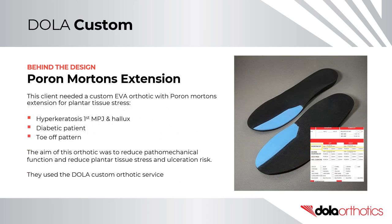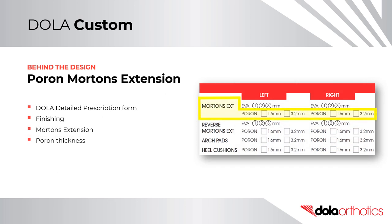Behind the Design – Poron Morton's Extension. This client needed a custom EVA orthotic with a Poron Morton's extension to reduce plantar tissue stress. The patient presented with hyperkeratosis under the first MPJ and hallux and is an at-risk diabetic. The aim was to reduce pathomechanical function and plantar tissue stress on the hallux to reduce ulceration risk. They used the Dollar Custom Orthotic Service and selected the Poron thickness from the Morton's extension section of the finishing section of the prescription form.